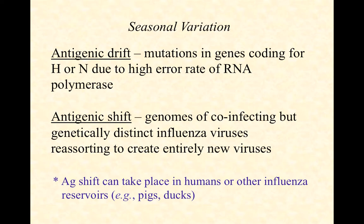With each round of an RNA polymerase creating new RNA molecules, there's the potential for introducing errors into the sequence. Those errors in the nucleotide sequence of each of those eight segments can literally translate into errors in the amino acid sequence of the resulting protein. So not only does the resulting protein behave a little bit differently, but it will actually look a little bit different to our immune system.